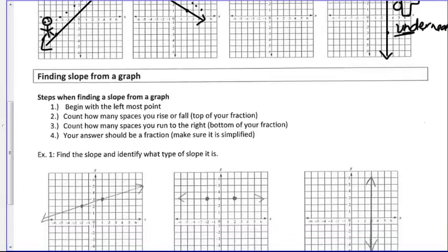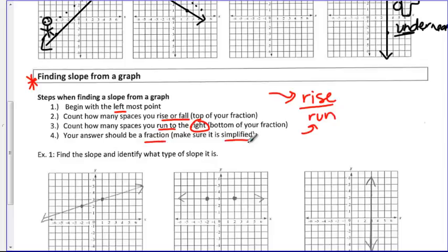Next thing we want you to do is we're going to work on finding slope from a graph. Remembering that slope is rise over run. First thing you're going to do is when you're looking at a line, you're going to begin from the leftmost point. Count how many spaces you rise or fall, and that's the top of your fraction. Then you count how many spaces you run to the right, and that's the bottom of your fraction. And make sure it's always written in fraction form and it's simplified.